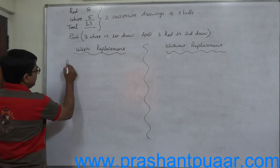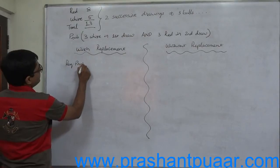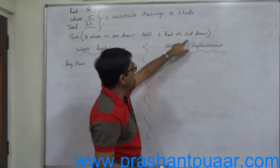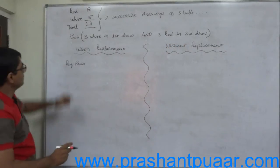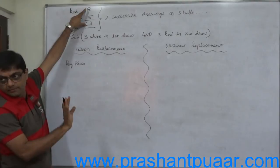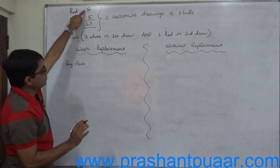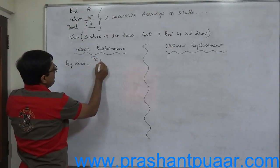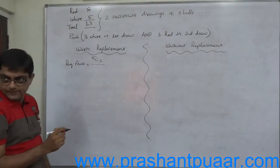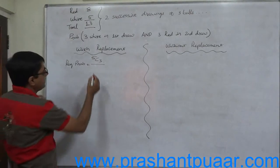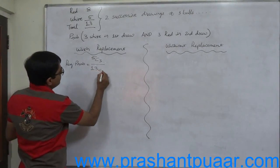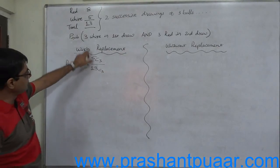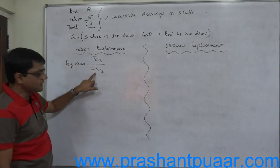Now let us take the case of with replacement. What is the probability of getting 3 white balls in the first draw and, after replacement, 3 red balls in the second draw? The situation remains the same: 3 out of 5 white bowls can be drawn in 5C3 ways, and 3 bowls out of 13 can be drawn in 13C3 ways.